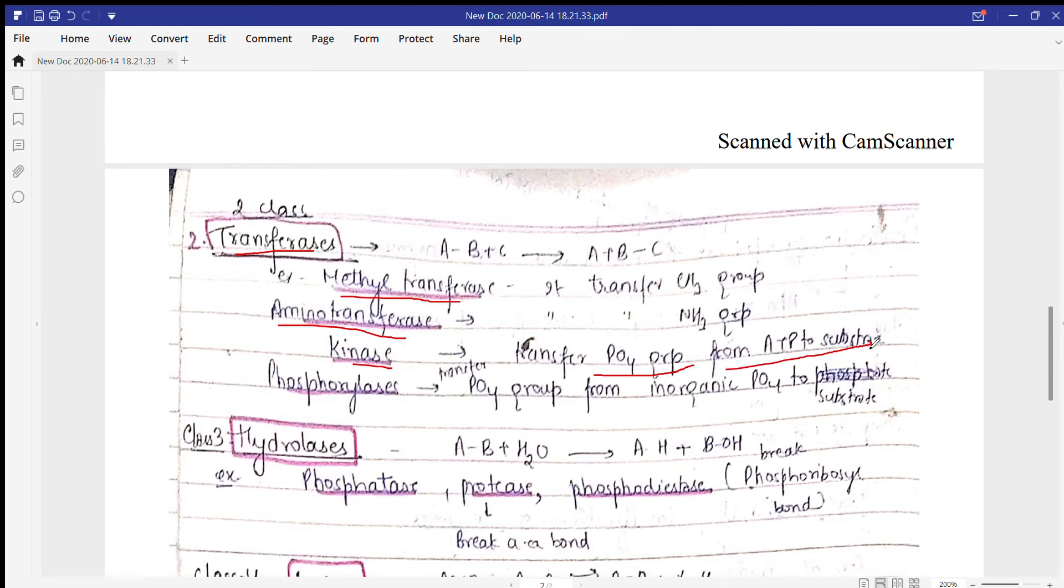In glycolysis, in the first step, glucose is converted into glucose-6-phosphate with the help of hexokinase. This hexokinase uses the phosphate group from ATP to form glucose-6-phosphate. So kinases are responsible for transferring phosphate groups, while phosphorylases transfer the phosphate group from inorganic phosphate to the substrate.